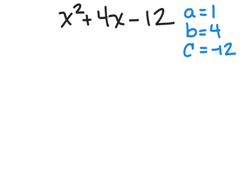So the process that we've been following is very simple. We're going to do a times c. So in this case, a times c means that I'm going to do 1 times negative 12. So the answer is negative 12.